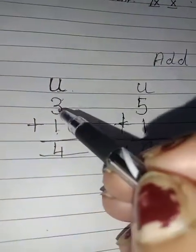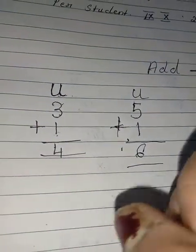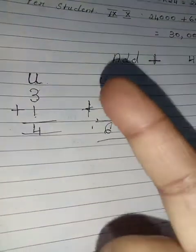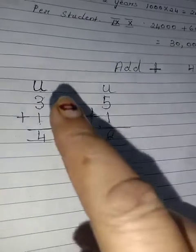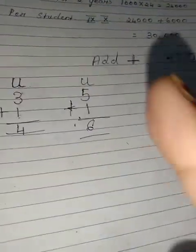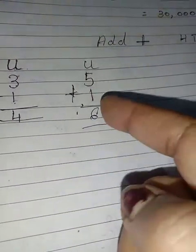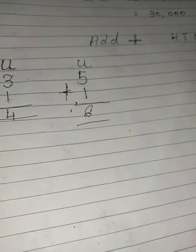Now this is 3 and this is 1. Hamesha niche wala number plus mein, haat mein ungli mein rakho. Ungli mein rakhke upor wala number ko marna hai aur bulana hai. 3 uska naam bulao. 3, 3 ke baad, 4 ek ungli khada hai, the 4 thik hai. 5 aur ek ungli khada hai, 6 thik hai.